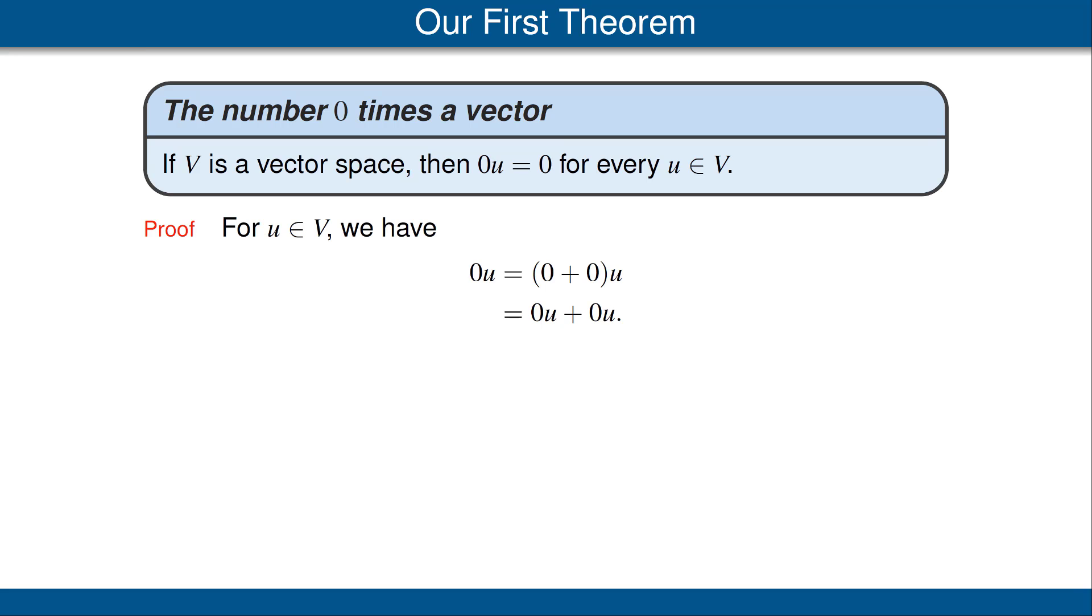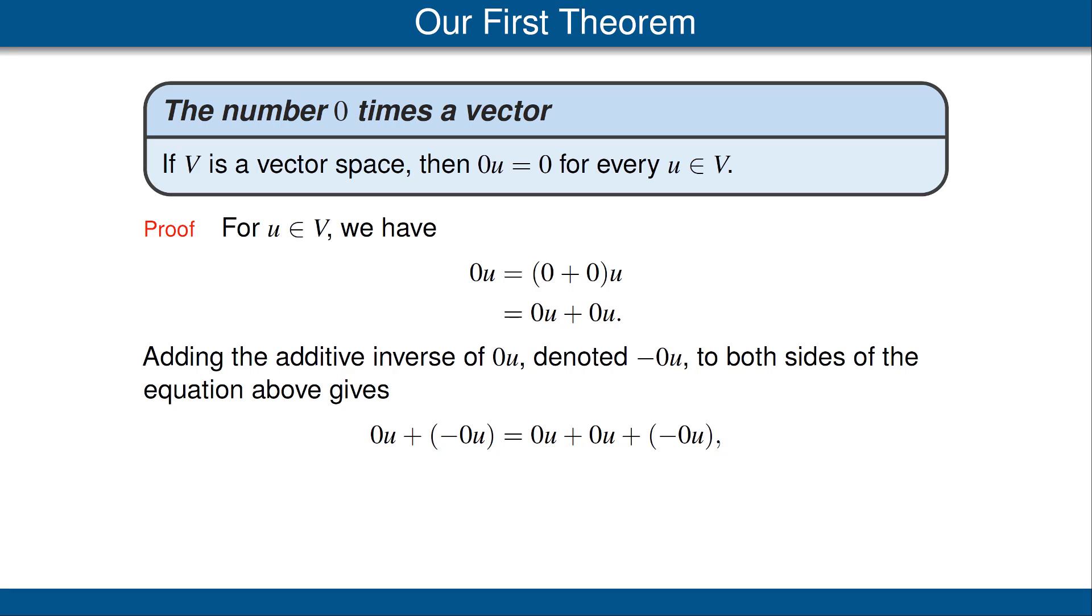For u a vector in V, we have 0u = (0 + 0)u. That's because we're dealing with the number 0, which is equal to 0 + 0. Now we use the distributive property to write the right side of that equation as 0u + 0u. Next, we add the additive inverse of 0u to both sides of the equation above, getting the new equation shown here. Notice that on the left side of this equation, we have 0u plus the additive inverse of 0u, which of course adds up to 0. On the right side of the equation, we have 0u + 0u plus the additive inverse of 0u. Grouping the last two terms together, we just get 0, and then adding that to 0u, we get 0u, giving us finally the equation 0 = 0u, completing the proof.